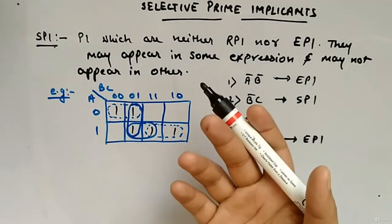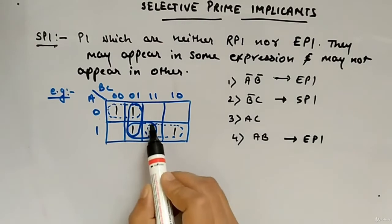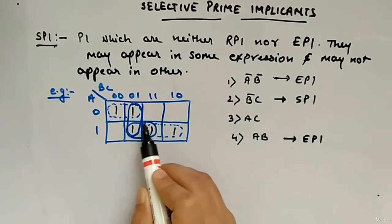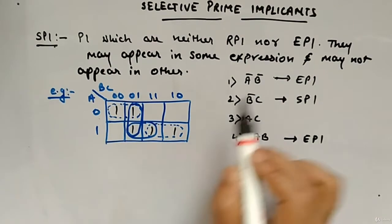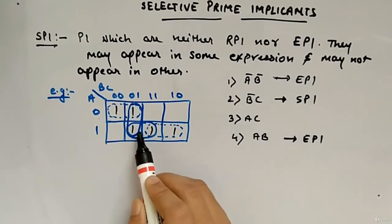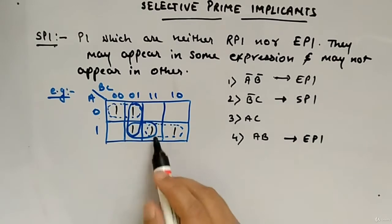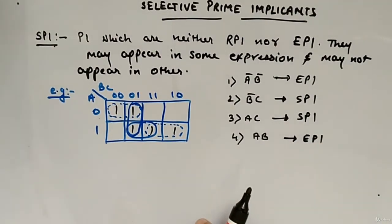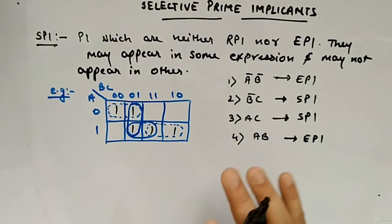So this one we checked — both conditions are not there, hence it is a selective prime implicant. Similarly for this group: if we check for essential prime implicant, at least one min term should have only one option, but here both min terms have multiple options — hence not essential prime implicant. If you check for redundant prime implicant, each min term should be part of an essential prime implicant. This min term is a part of EPI, but this min term is not, and hence this group is also a selective prime implicant. If any one of them occurs, it is not SPI. If both do not occur, it is SPI.